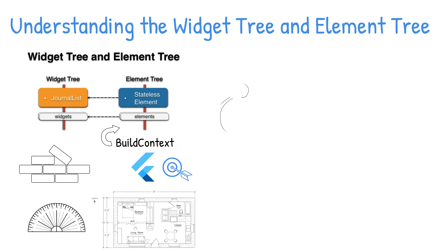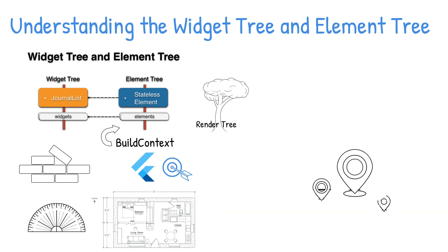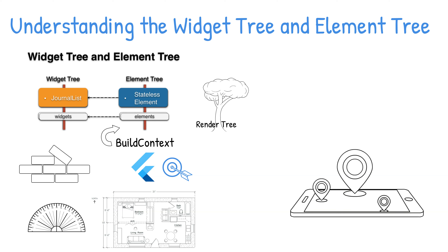There is a third tree called the render tree that is a low-level layout and painting system that inherits from the render object. The render object computes and implements the basic layout and paint protocols. You won't need to interact directly with the render tree — you will be using the widgets.